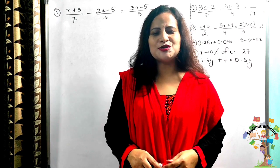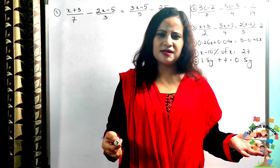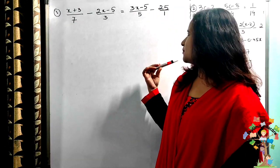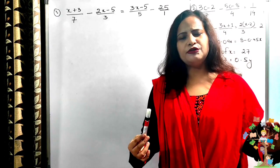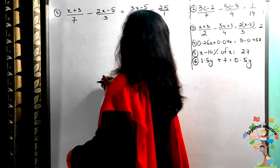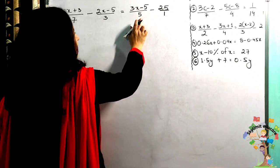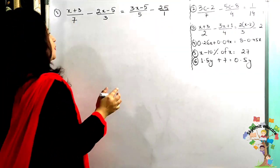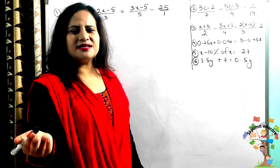Welcome back students. Today we will solve some more questions on linear equations — solve and verify. I have already written some questions; today we'll be solving these. Go through each step carefully. Let's start with the first question. Here we have denominators 7, 3, 5, and 25 has no denominator so I have written 1. The LCM of 7, 3, 5 will be 105.